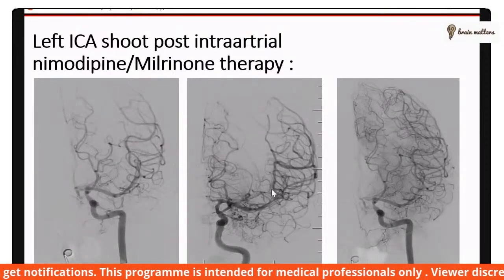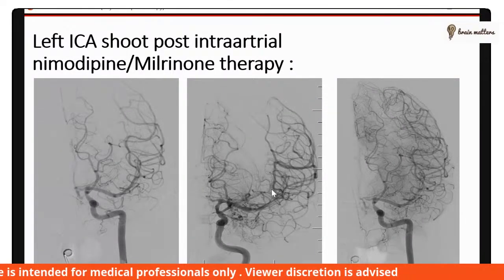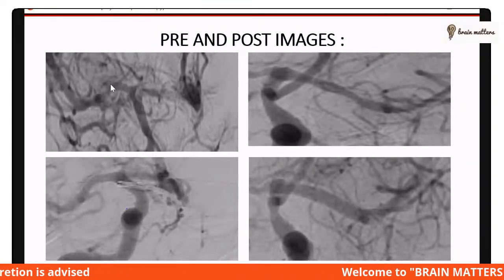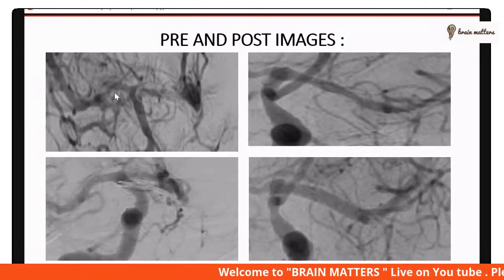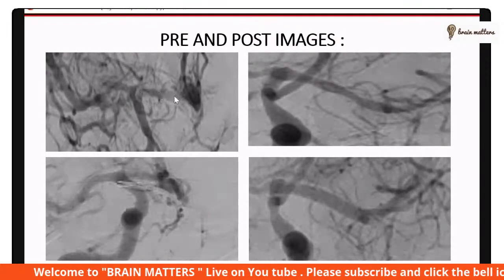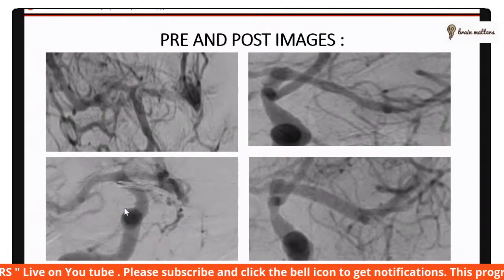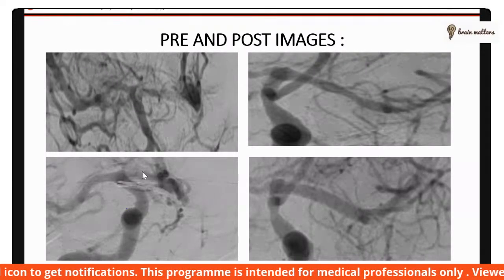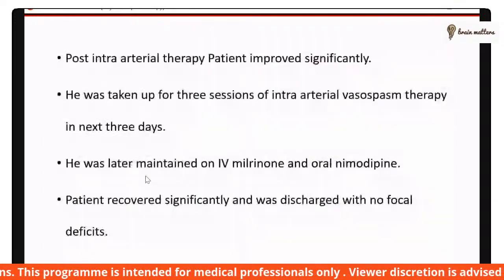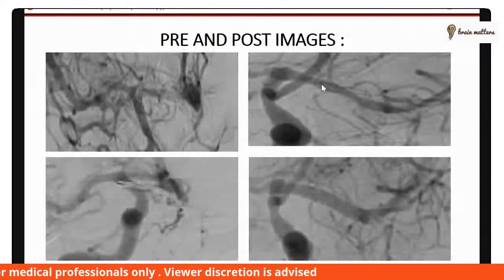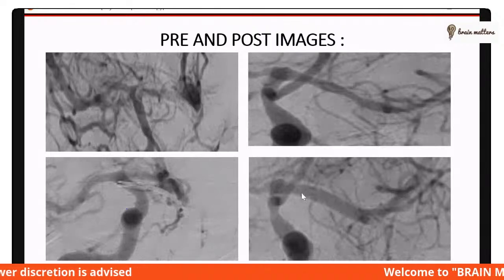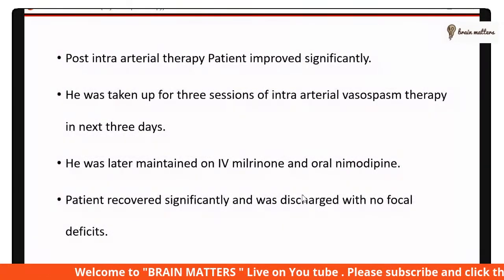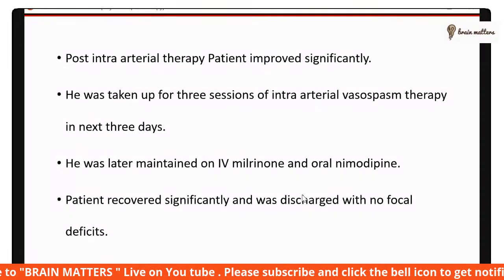Even on the left side there was improvement in moderate vasospasm. These are the pre and post images. The initial image shows vasospasm over the right side MCA, ACA, and terminal ICA. Post-milodipine infusion there is significant improvement. On the left side there was moderate vasospasm initially, which also improved post-milodipine intra-arterial infusion.